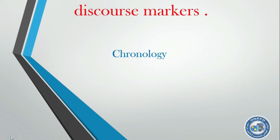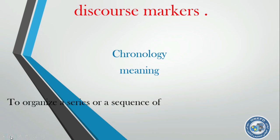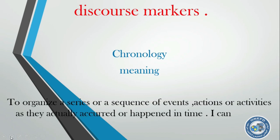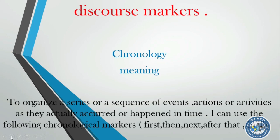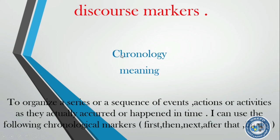Now let's see chronology and its meaning. It's like an introduction. So what do we mean by chronology? To organize a series or a sequence of events, actions, or activities as they actually occurred or happened in time. I can use the following chronological markers: first, then, next, after that, finally. So this is a very short introduction so we can understand the meaning of chronology.